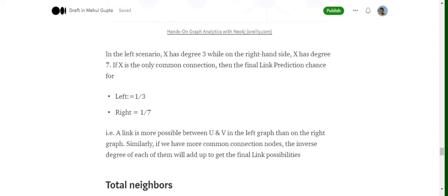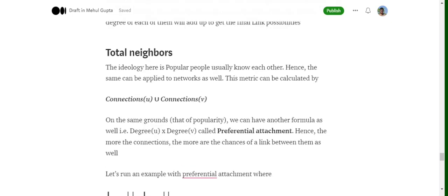Now total connection is easy. It goes on the idea that popular people, people which have more connections, which have higher degree, tend to be connected between them. So it is given by the formula connections of U union connections of V.